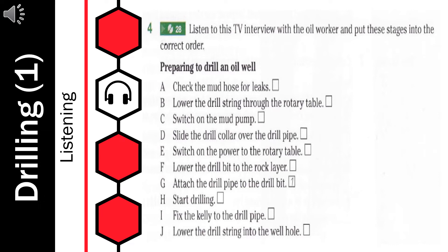Here I am on the Western Desert Oil Rig, one of the biggest land rigs in the world. I'm talking to one of the drilling crew, Asif Khan. Asif, I understand that you were the driller on the day that the well was drilled from this rig. Yes, that's right, with my team. We drilled the first well here. So, could you talk us through what you and the others did in that first drill? Well, first of all, we made up — meaning we attached — the drill pipe to the drill bit. We screwed them together. And then we slid the drill collar over the drill pipe so that it sat on top of the drill bit.